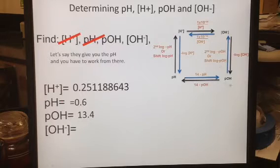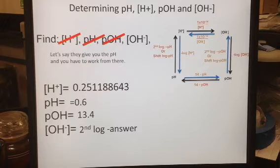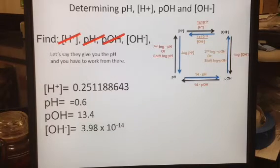Now I'm over here at the pOH. To go up to the hydroxide ion concentration, I'm going to take the second log of the negative pOH, or once again, the shift log of the negative pOH. So my formula is the second log of the 13.4. It's already in my calculator, so I have to take the second log of my negative answer. Try not to clear your calculator out when possible, and just let the numbers ride. So that's going to be 3.98 times 10 to the negative 14.